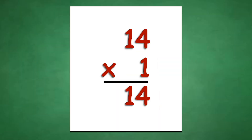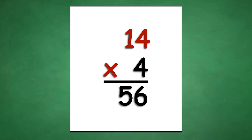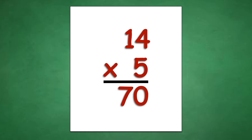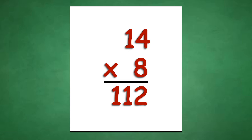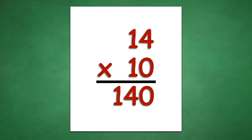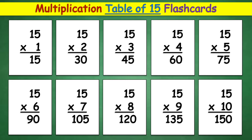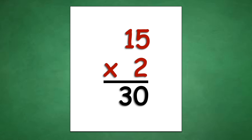Table of 14: 14 times 1 equals 14, 14 times 2 equals 28, 14 times 3 equals 42, 14 times 4 equals 56, 14 times 5 equals 70, 14 times 6 equals 84, 14 times 7 equals 98, 14 times 8 equals 112, 14 times 9 equals 126, 14 times 10 equals 140.